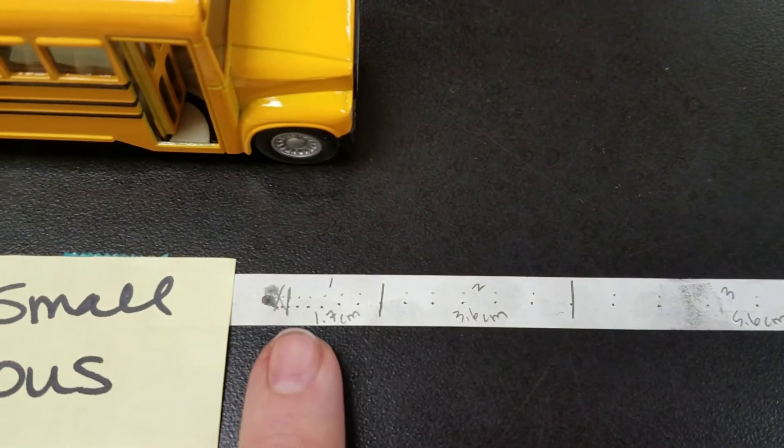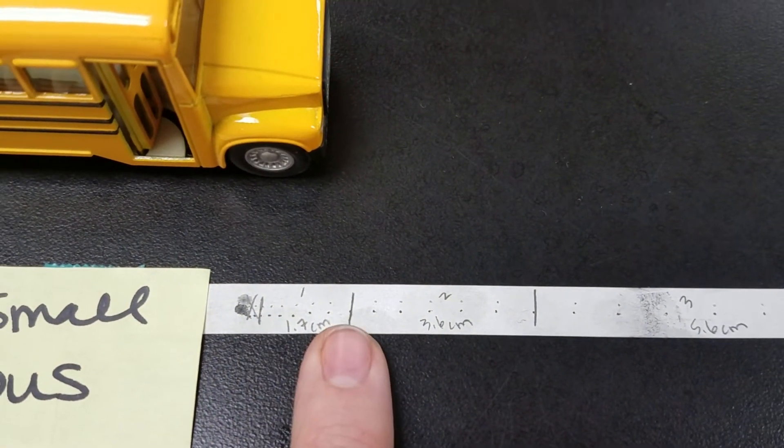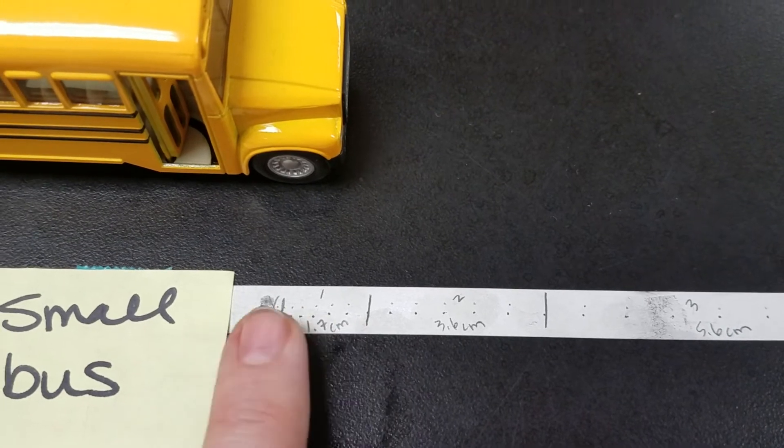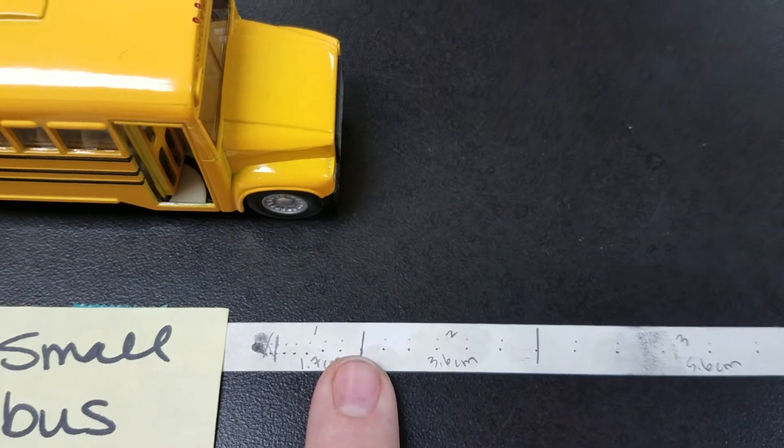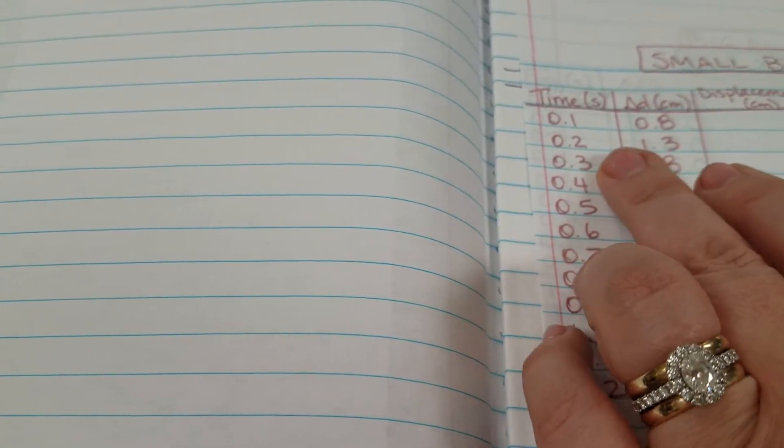And what this actually represents is one-tenth of a second. So six dots, six sets of dots equals one-tenth of a second. And so you can see right here under time you should have written 0.1, 0.2, 0.3, 0.4, all the way down. So that's what that represents.